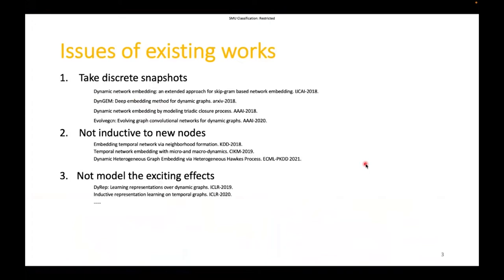Temporal graph representation learning has drawn significant attention for the prevalence of temporal graphs in the real world. However, most existing works resort to taking discrete snapshots of the temporal graph or are not inductive to deal with new nodes or do not model the excitation effects, which is the ability of events to influence the occurrence of another event. In this work, we propose TREND, a novel framework for temporal graph representation learning driven by temporal event and node dynamics, and build upon a Hawkes process-based graph neural network.